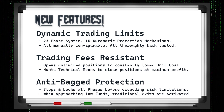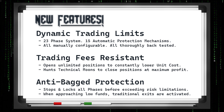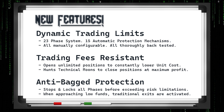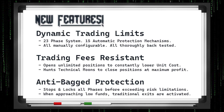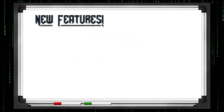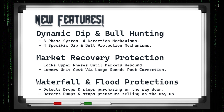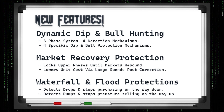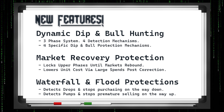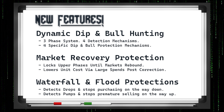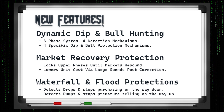We're still trading fee resistant, trying to hunt those technical moons to get the most of every trade. We're still anti-bagged, meaning we lock all phases before they exceed their risk limitations. If you're approaching low funds, we actually start doing traditional old-school 4.2 action on exits. We've also built in a dynamic dip and bowl hunting system — a three-phase system with four detection mechanisms and four specific protection mechanisms just for dips and bowls. We do market recovery protection, trying to spend more when the market's correcting itself. And we have the famous waterfall and flood protection.